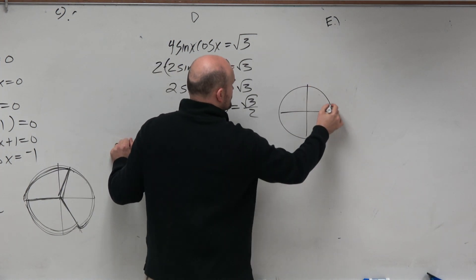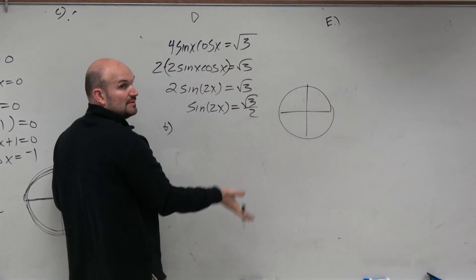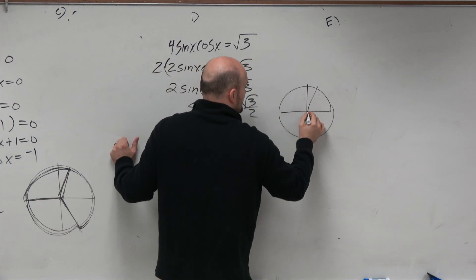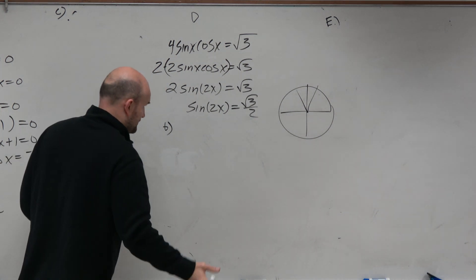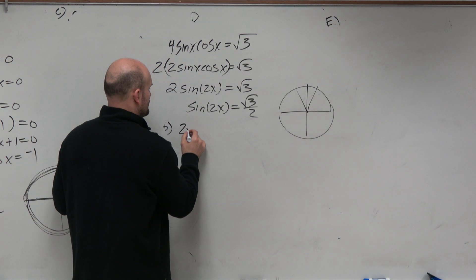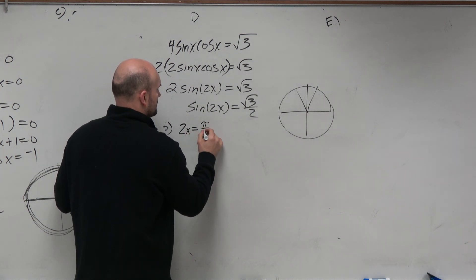Now we're looking for square root of 3. That's going to be the same, but sine is positive. That means it has to be above the x-axis. So it's going to be those two angles, which by the way are π over 3 and 2π over 3. So we'll say 2x equals π over 3.